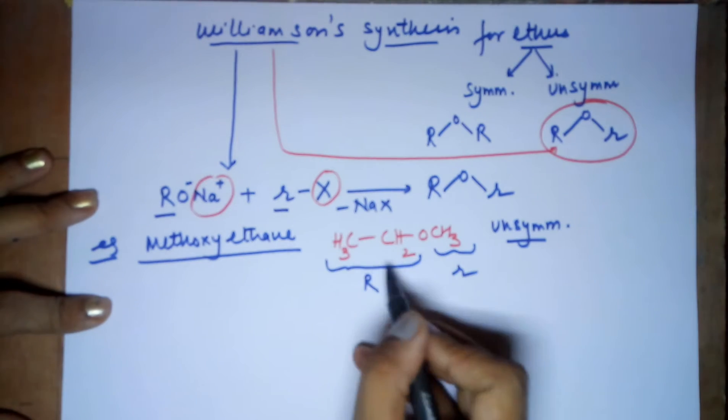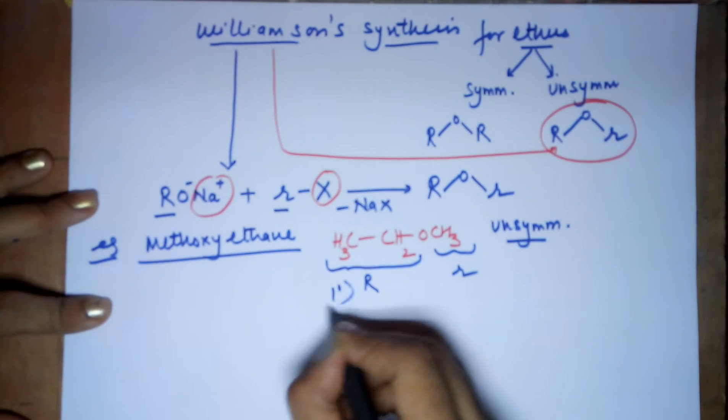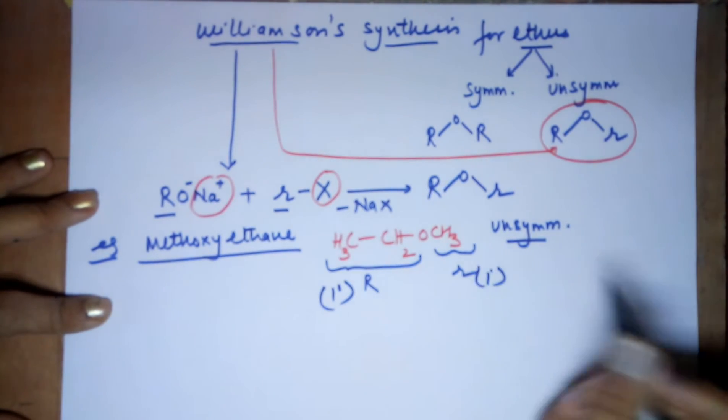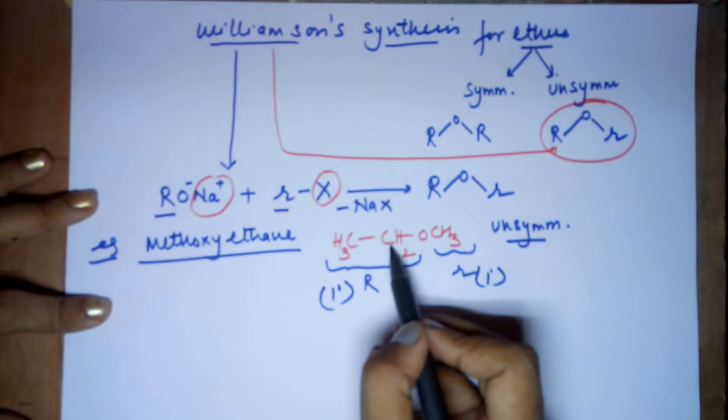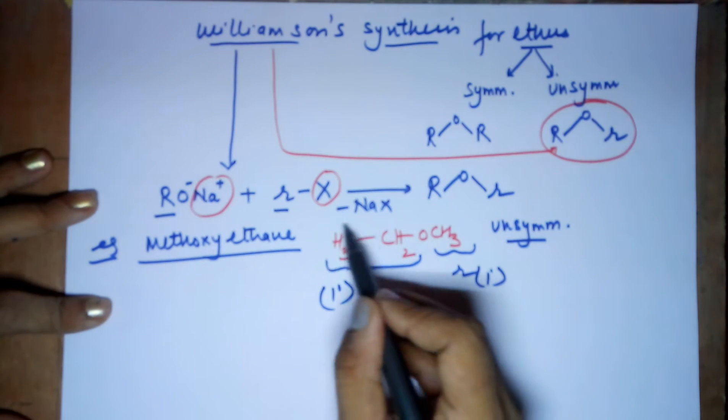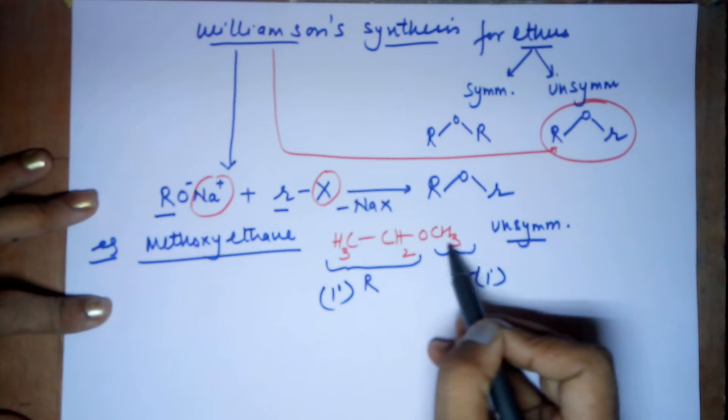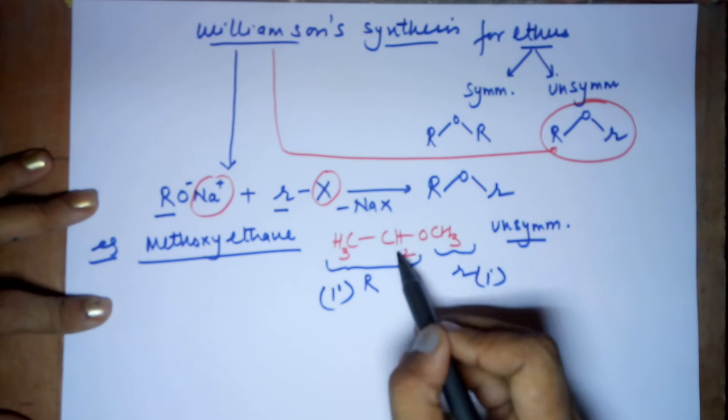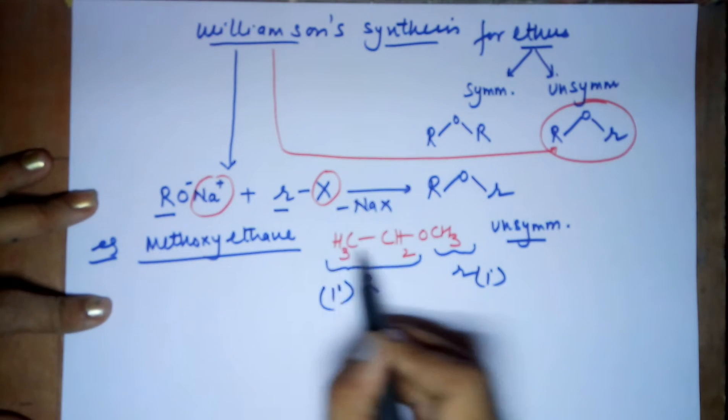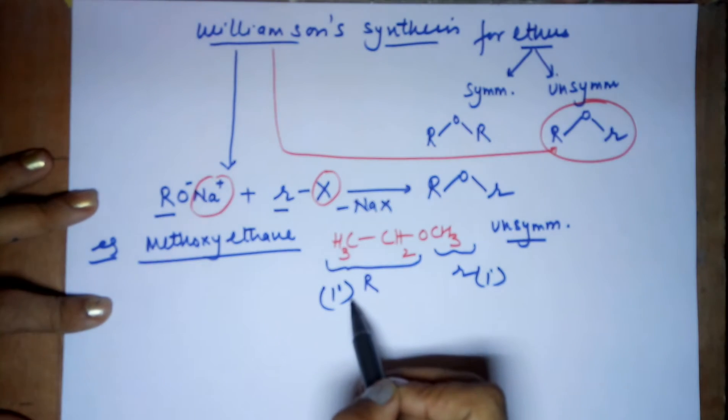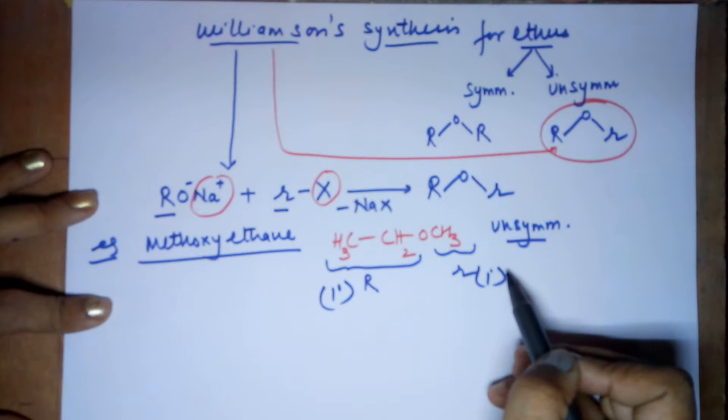Now, fortunately, both the R-groups are 1 degree. Primary, because the carbon to which the oxygen is attached is only attached to one R-group or no R-group. So such carbons where you have got 2 hydrogens at least are called as primary carbons. So this unit is said to be a primary alkyl group. This is also a primary alkyl group.